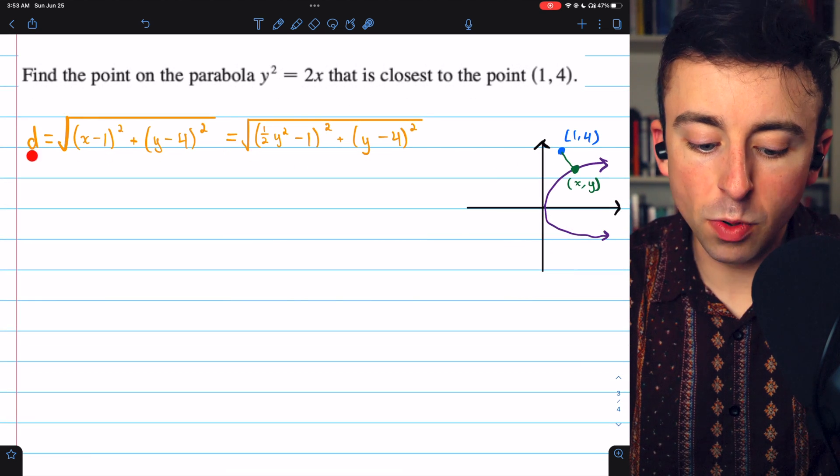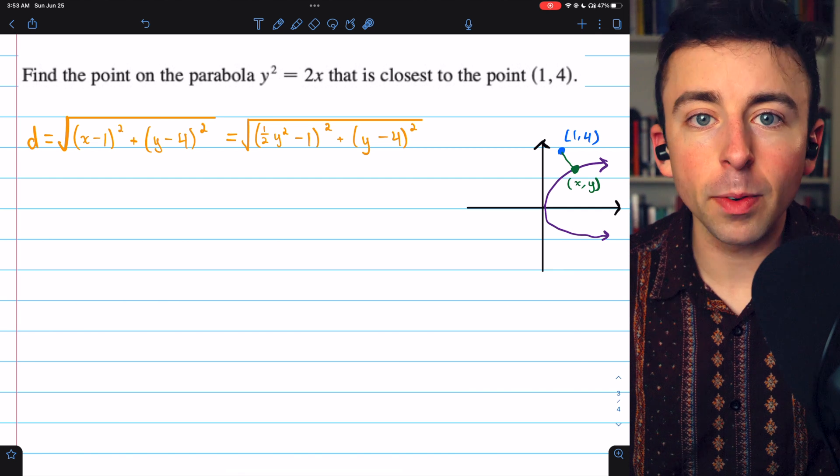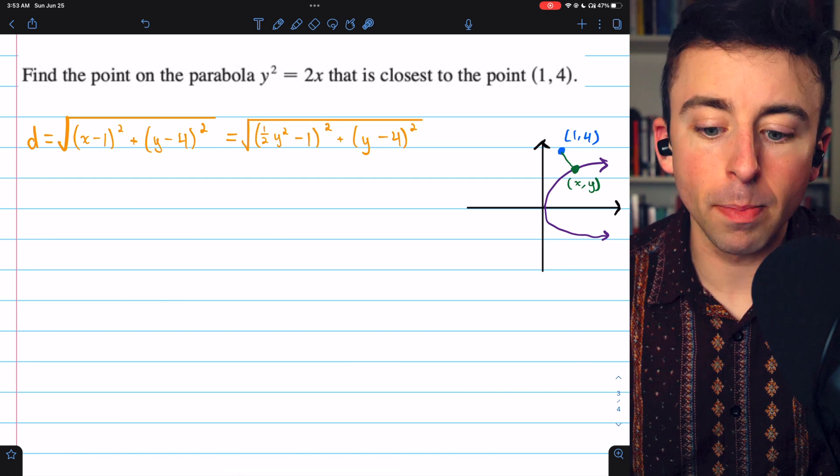We could move forward using this square root function for our distance. However, the distance we know is going to be positive. The square root always gives a positive number.